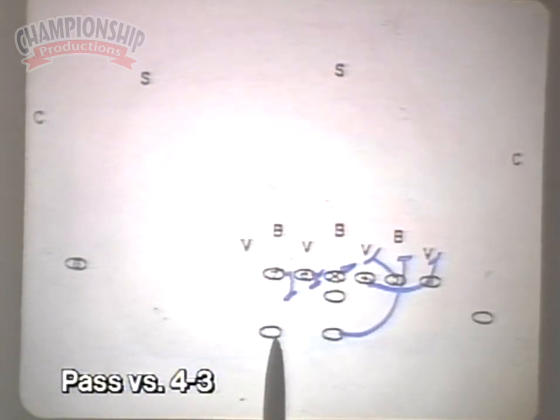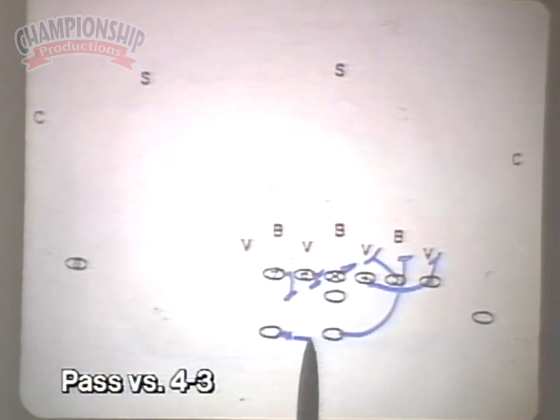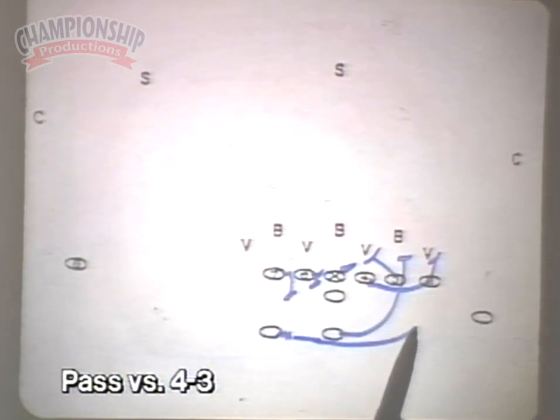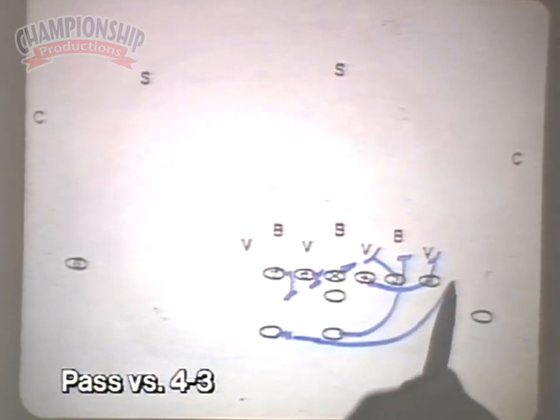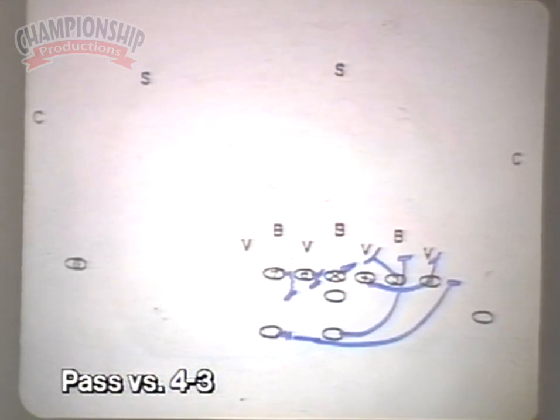The left halfback is in early motion. He leaves about a step and a half early. He comes around the quarterback for a fullback mesh, and he blocks anything that shows coming off the edge of that defense. So any kind of corner blitz would belong to him.